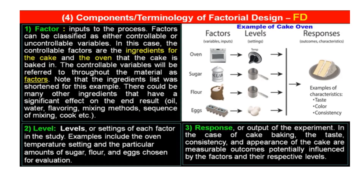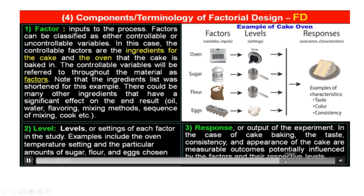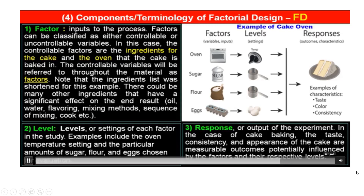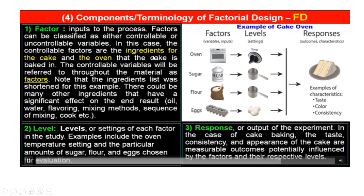These factors and their levels give responses — responses are the outcomes or characteristics. The factors used can affect taste, color, and consistency. A factor is the input to the process. Factors can be classified as either controllable or uncontrollable variables. In this case, the controllable variables are the ingredients for the cake and the oven. There could be many other ingredients — oil, water, flavoring, mixing methods, sequence of mixing, cook time — that can also be different factors.